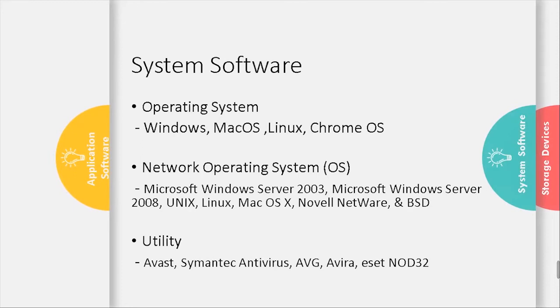System software includes the operating system — examples are Windows, Mac OS, Linux, and Chrome OS. Network operating systems include Microsoft Windows Server 2003 and 2008.